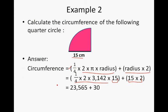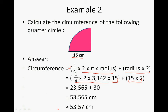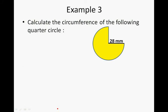The quarter circle's circumference is 23.565, and then we add the two radii, and that equals 53.565 centimetres. Rounded, it is 53.57 centimetres.